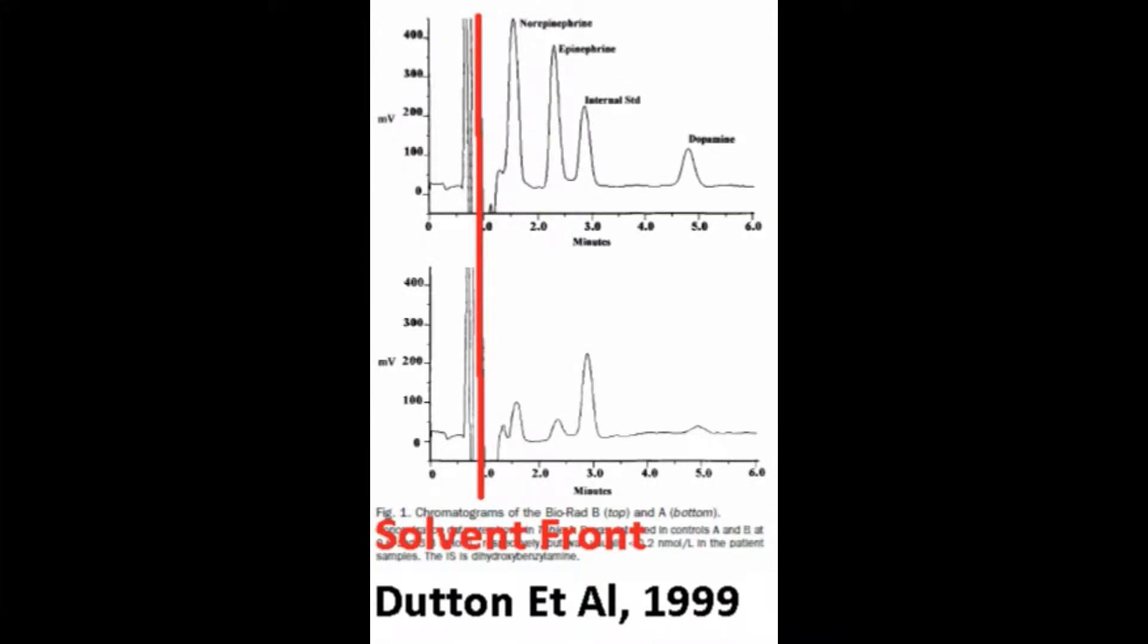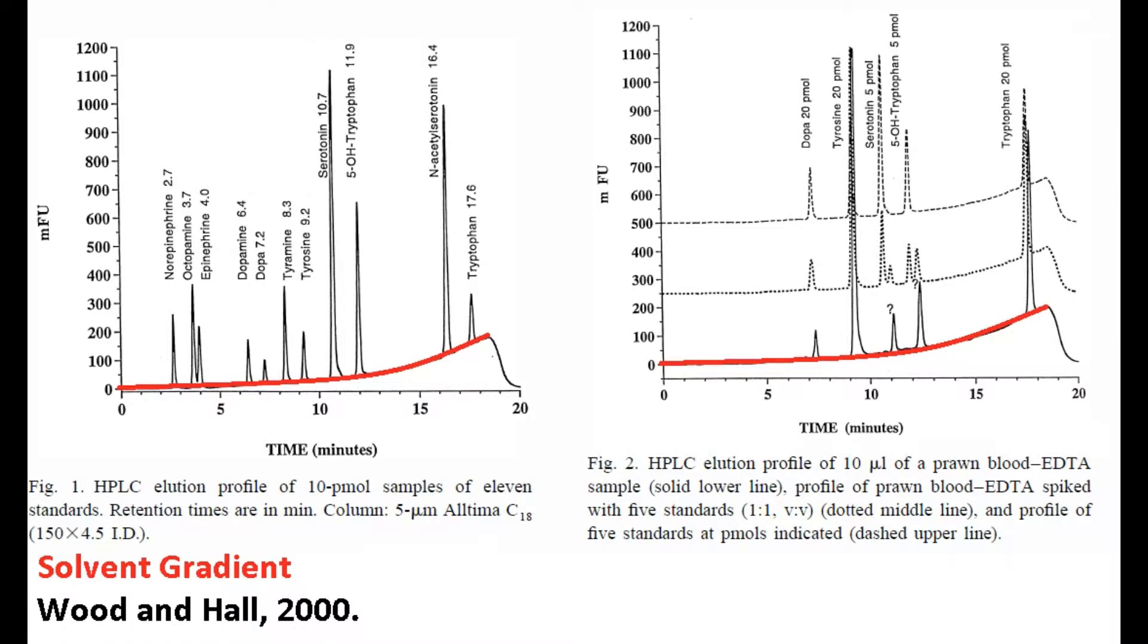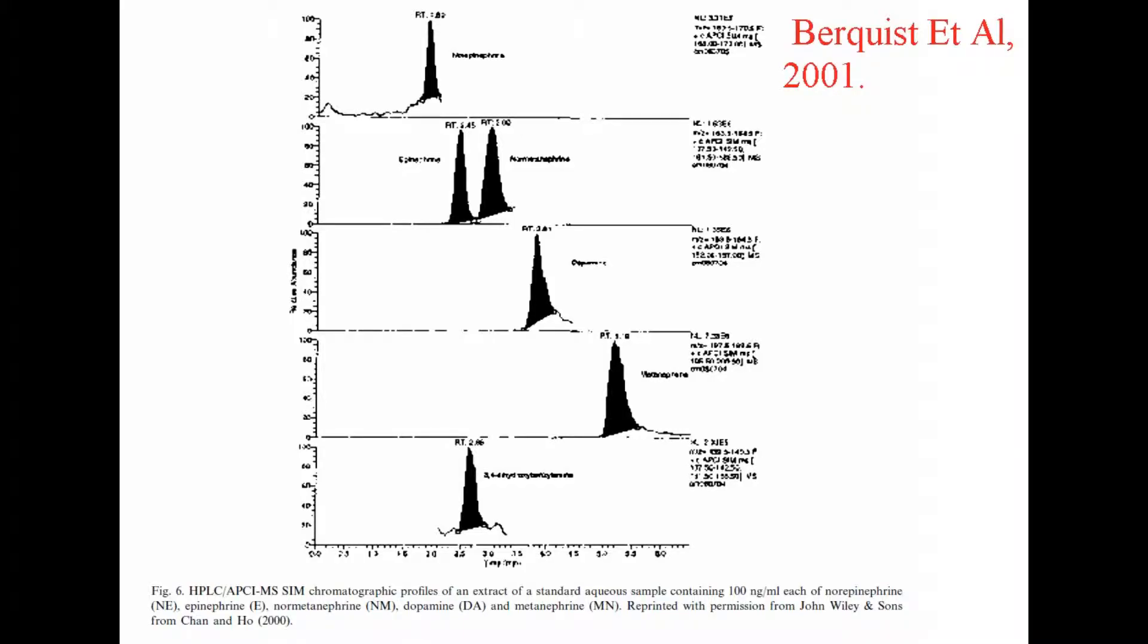The machine can also use this time to create the baseline for the solvent front, a phenomenon where the detector encounters the mobile phase and reads an abnormally large amount of feedback. These graphs are from Dutton & Co., 1999, Wood & Hall, 2000, and Berquist et al., 2001.